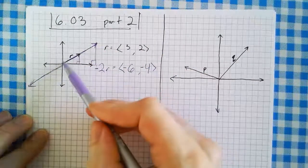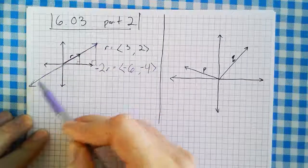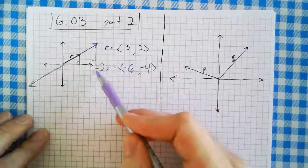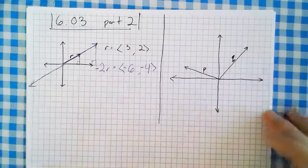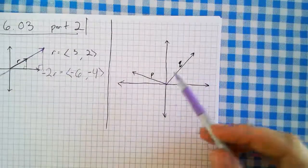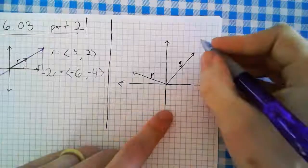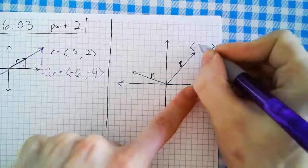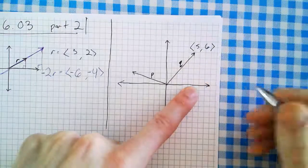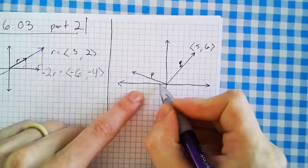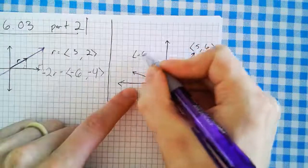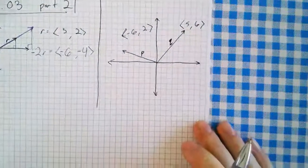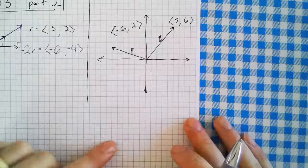So positive 2r gives one vector and negative 2r gives the opposite vector. If you want to go in the 180-degree opposite direction, you multiply by a negative. Over here I've got two different vectors: vector p and vector q. Let me write their component forms. Q is (5, 6) and p is (-6, 2). So there I've got p and q both in component form.